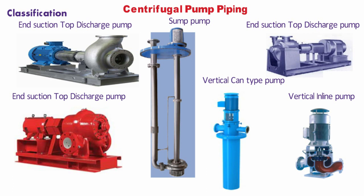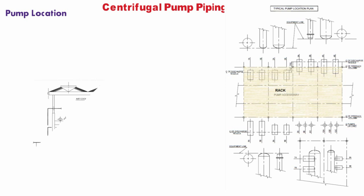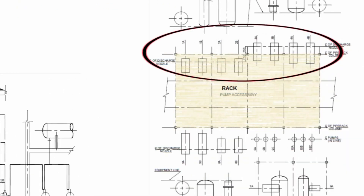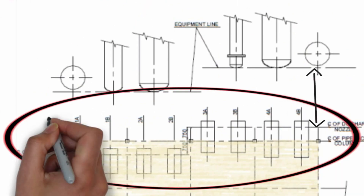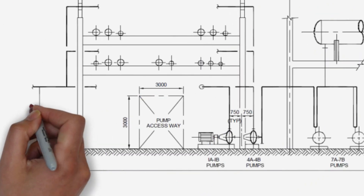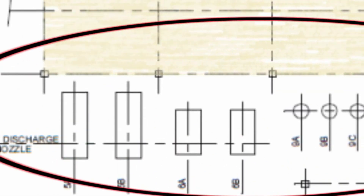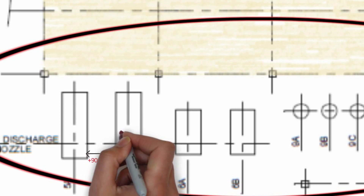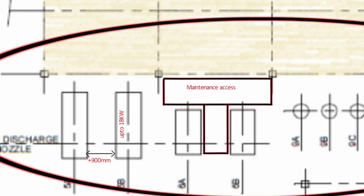Now let's look at the points to consider when locating a centrifugal pump. The pump location should be as close as possible to the suction source. Minimize pressure drop and maintain NPSH in the system while satisfying piping flexibility requirements and nozzle allowable loads. Consider the straight run requirements at the suction side. Pumps handling hydrocarbons should not be placed below air coolers. Pumps should be placed preferably outside the pipe rack toward the rack side, with clearance provided between the rack foundation.